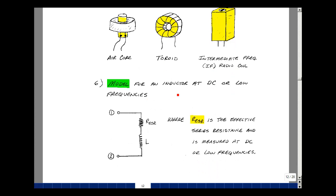We can model an actual inductor at low frequencies or DC with the following equivalent circuit: an ideal inductance and an ideal resistance. The resistance represents the resistance of the wires themselves, and the inductance represents the inductive effect that they have. The resistor is called R sub ESR, and it's called the effective series resistance, as measured at very low frequencies or DC.